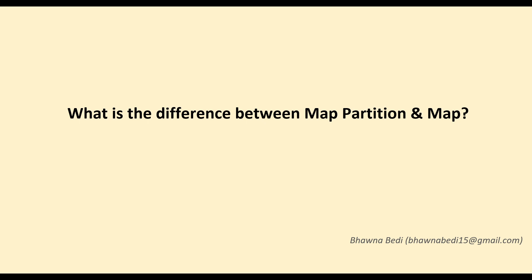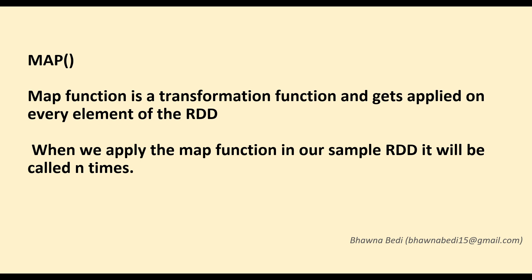Moving ahead with the difference between the two — when we talk about the map function, if you have been watching my previous videos, you already know that I've used the map function multiple times. In Spark, we have an RDD — the basic data structure for Spark. Whenever you use a map function on an RDD, it gets applied to each and every element of that RDD. So if an RDD has 100 elements, the map function will process each and every one of those 100 elements.